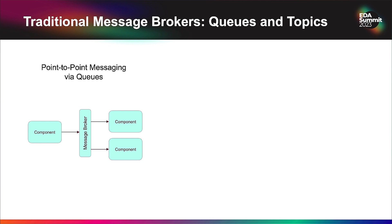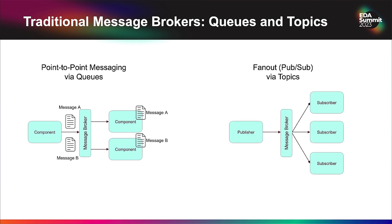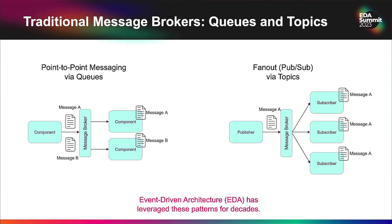In the EDA world we've used traditional message brokers with queues and topics. With queues we deal with point-to-point messaging — a component sends a message to a broker and the broker delivers it to one of the subscribed components. We also have the option of fan-out or pub/sub using topics, where the publisher sends a message and all subscribers are notified. In event-driven architecture we've leveraged these patterns for decades as integration patterns, but we haven't necessarily applied them to APIs successfully.